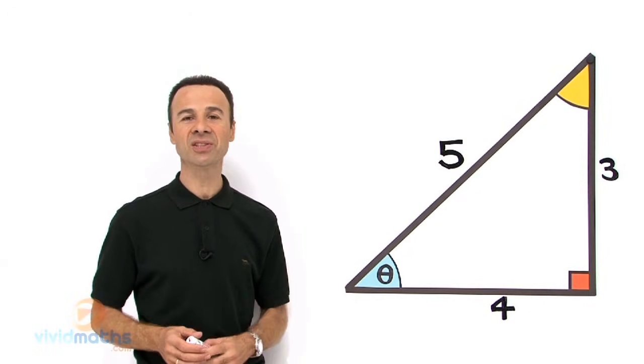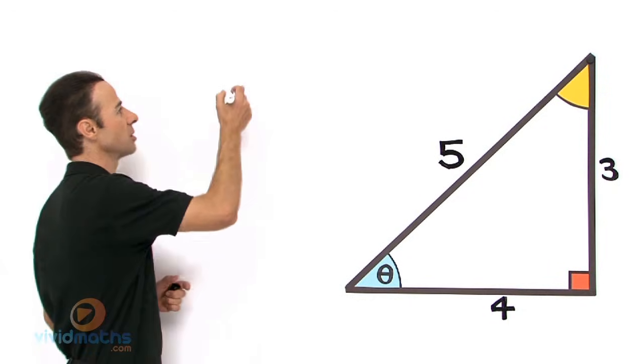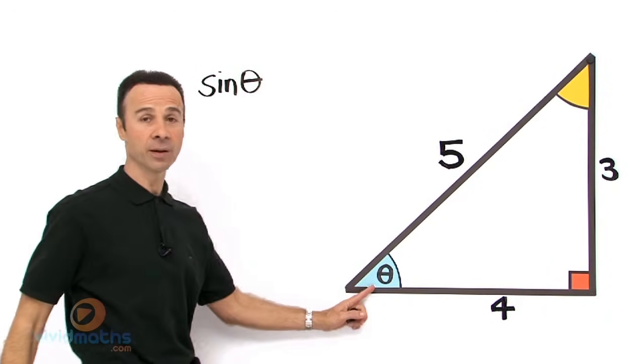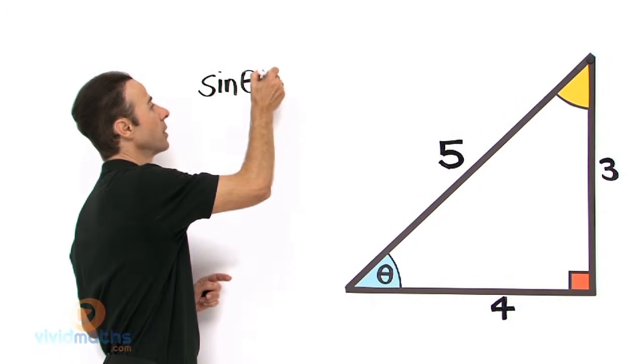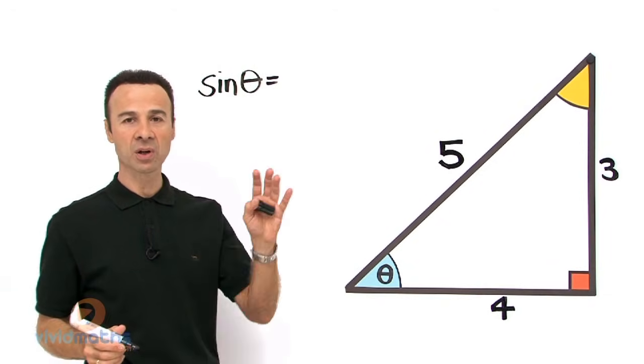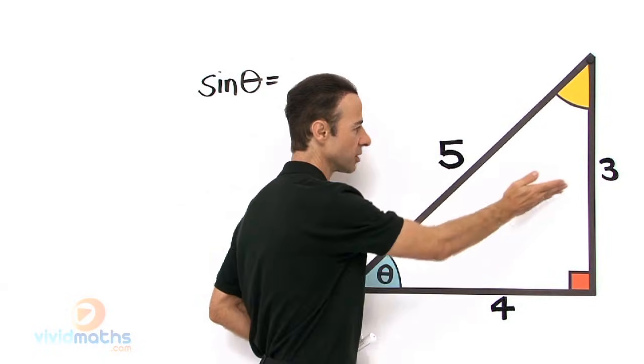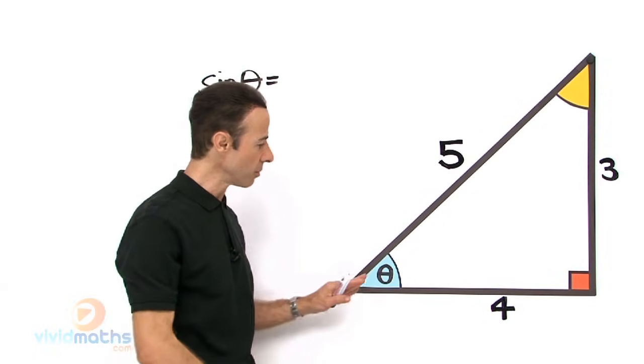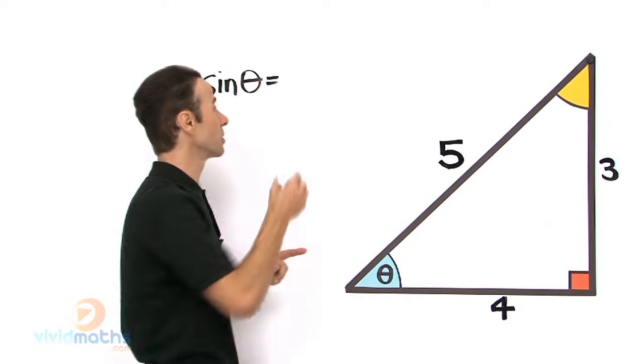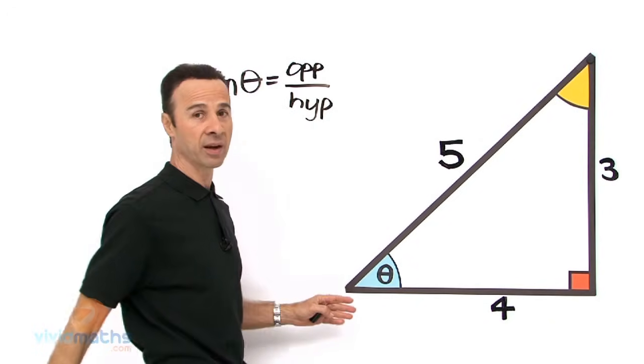Now what the question asks is to find sine theta as a ratio. So if we are looking for sine theta, quite simply what we do is write down sine theta, which is this guy down here, so we are working with this angle. Sine theta equals, now what does sine theta equal? It is opposite over hypotenuse. Now if we look at this and we want to find opposite, it is straight ahead, so straight opposite the sine theta pointing right across there is the number 3.